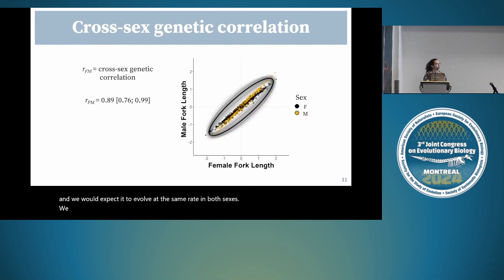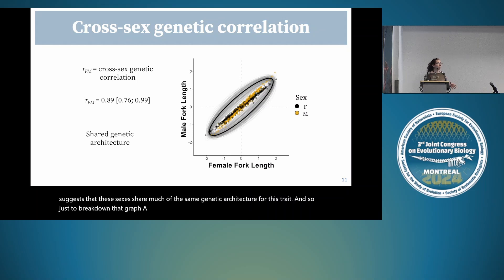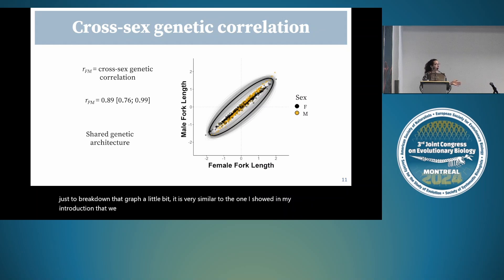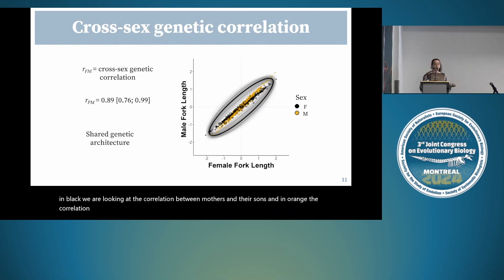We found a strong positive cross-sex additive genetic correlation approaching one, suggesting the sexes share much of the same genetic architecture for this trait. On the y-axis is male fork length, on the x-axis female fork length. In black, the correlation between mothers and their sons; in orange, the correlation between fathers and their daughters. In both cases, it is a very strong correlation.